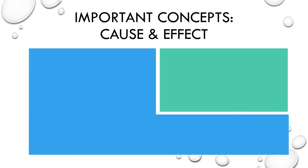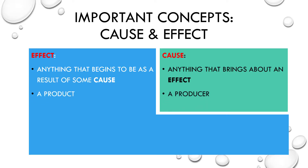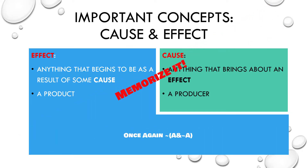Let's take a look at some important concepts before we examine each method. An effect is anything that begins to be as the result of some cause. Notice how it's defined with reference to cause. We can define a cause as something that brings about an effect, but this seems uninformatively circular. So it might be better to think of a cause as that which produces, and an effect as that which is produced. It's possible that something be both a cause and an effect, just not at the same time and in the same way — that's our law of non-contradiction — because they are relative terms.